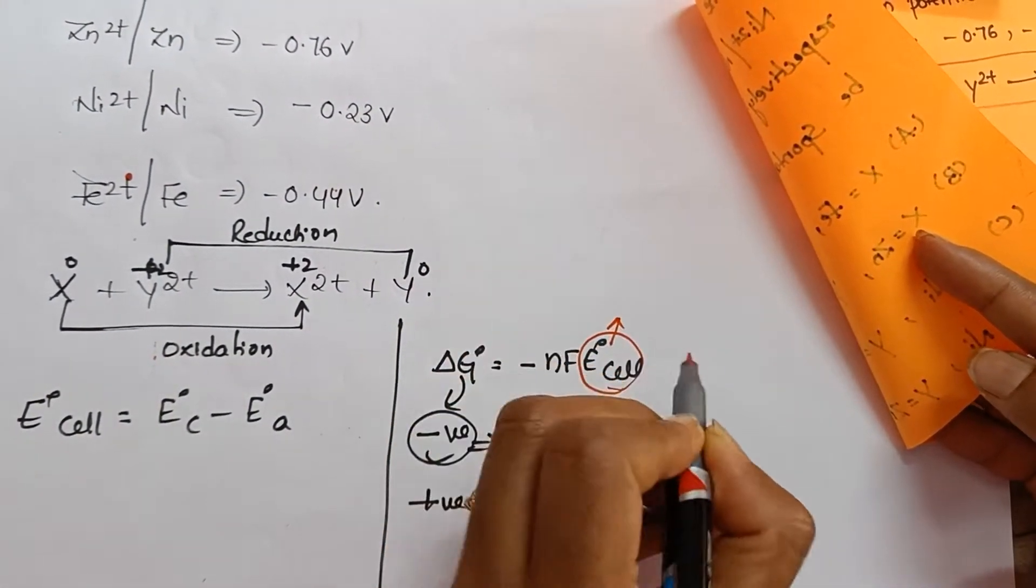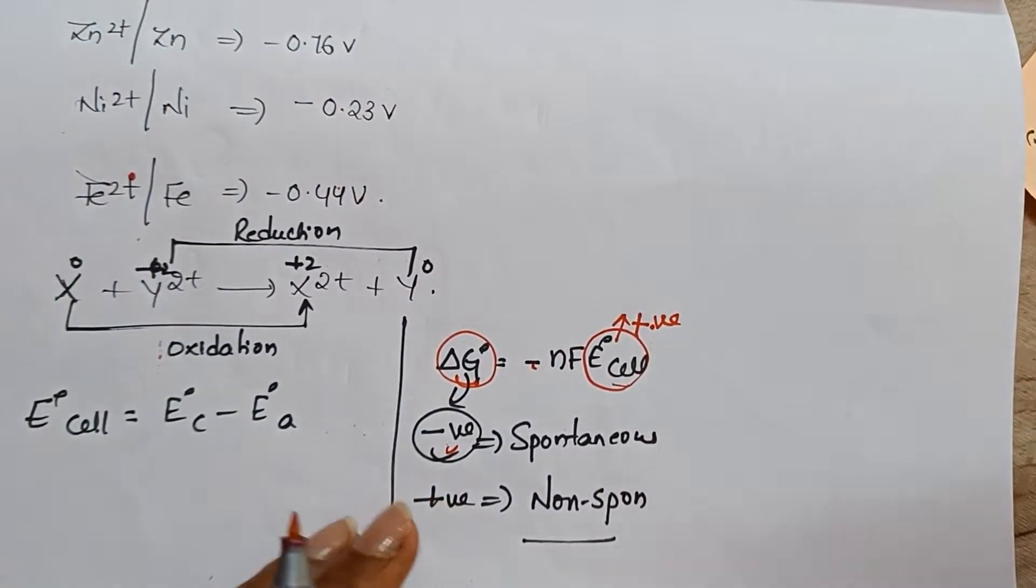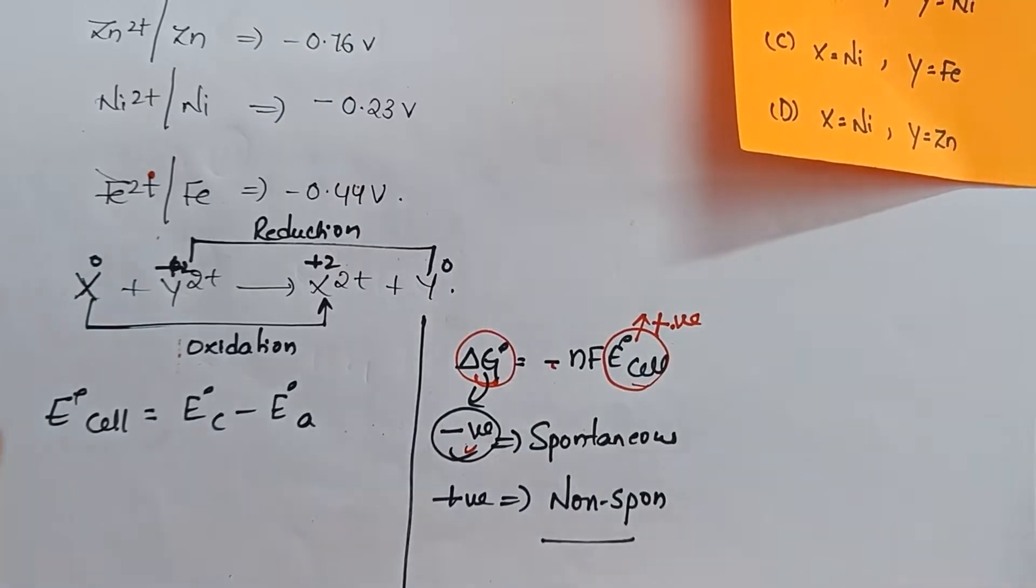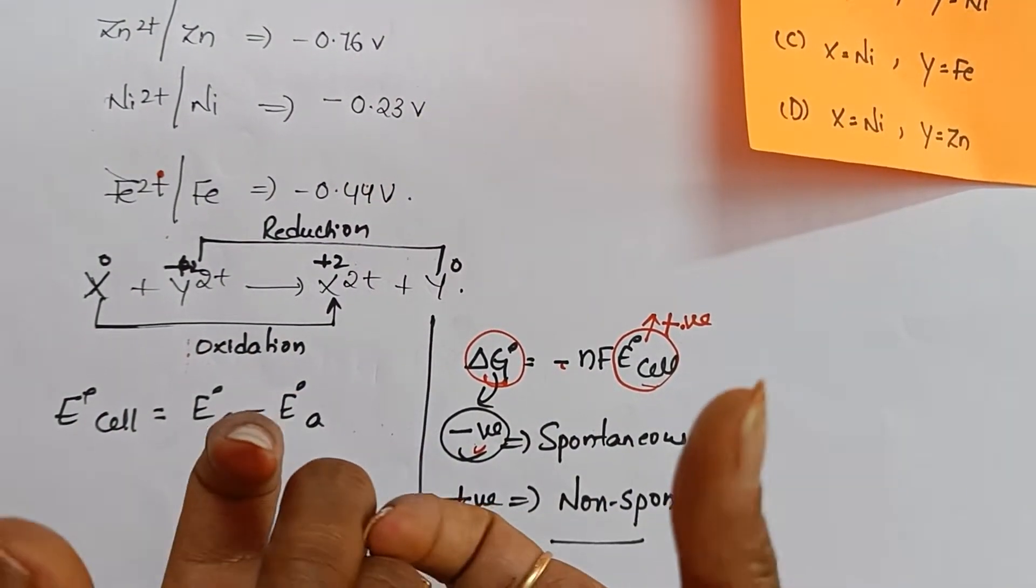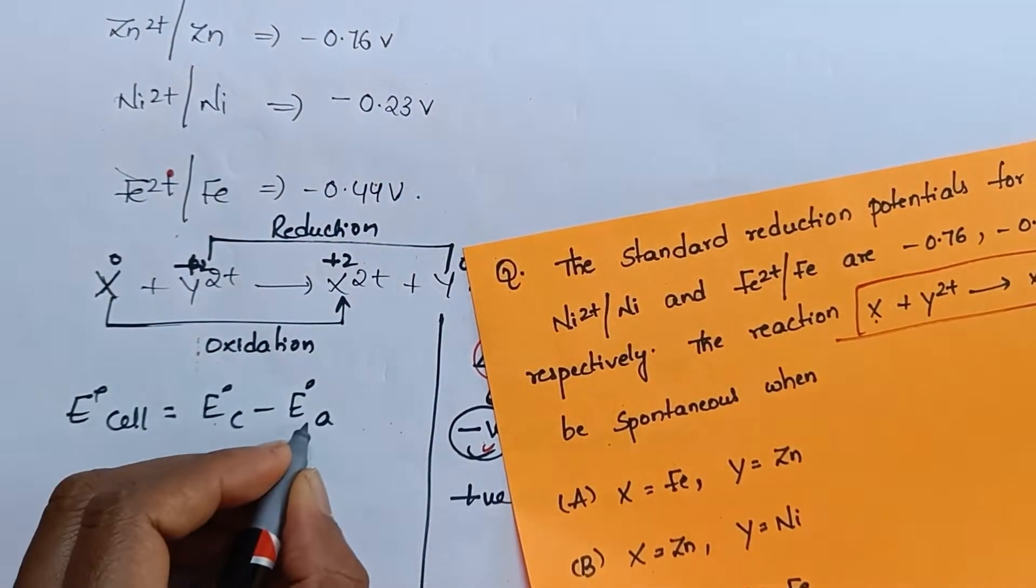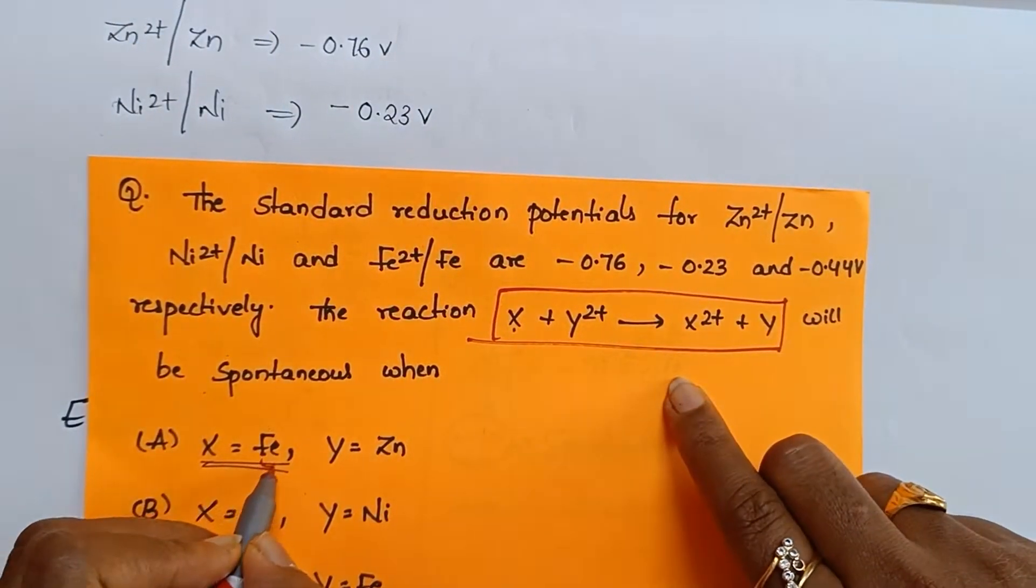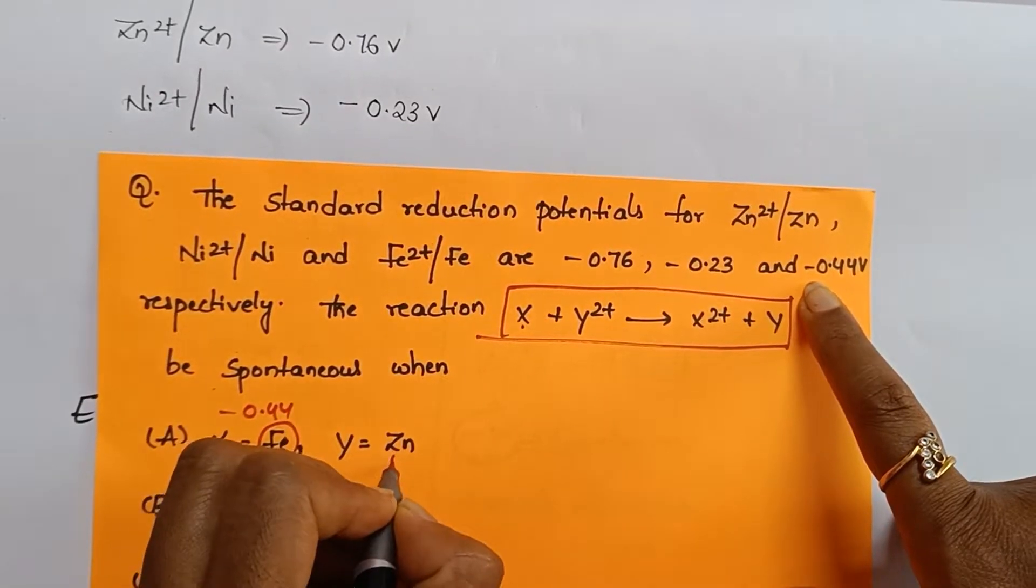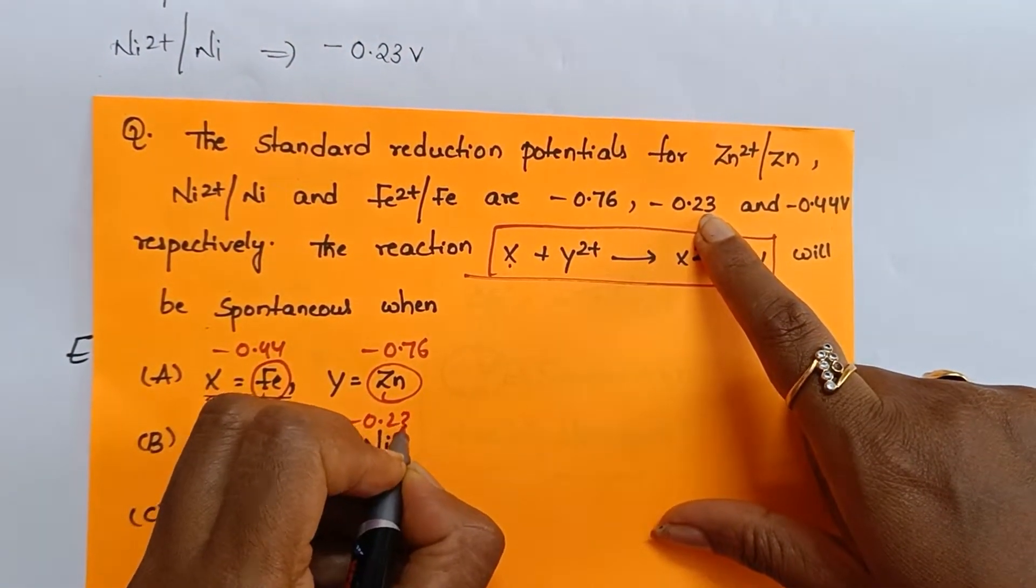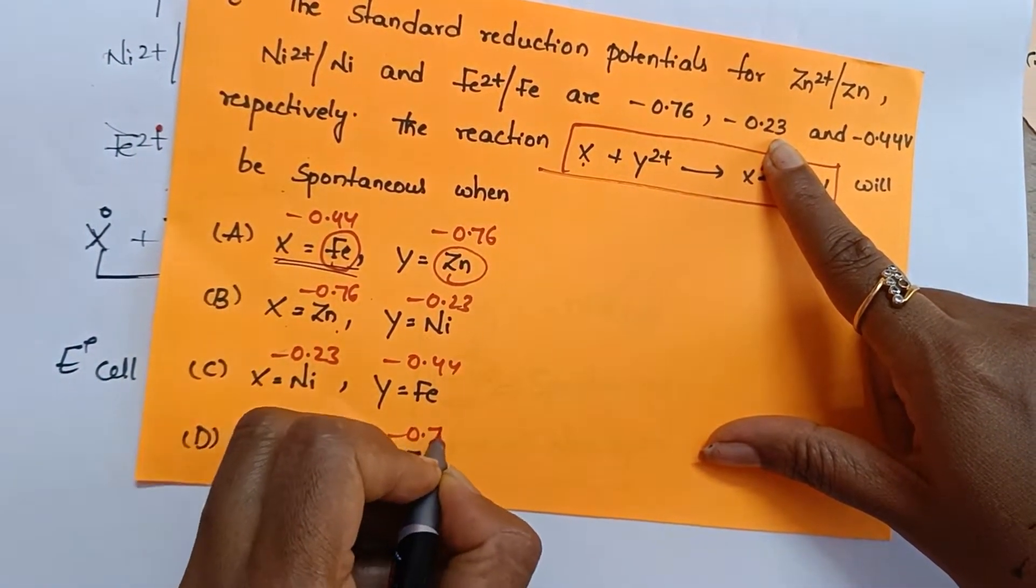How the delta G value will be negative? If E naught cell, if you substitute positive value, positive into negative will become delta G negative. So in order to make the reaction possible, E naught cell value, standard cell potential, that is the potential difference between two cells - cathode potential minus anode potential - that value should be positive, then only reaction will be spontaneous. So the difference between these two should be positive. Let us substitute iron. What is the value they have given for iron? Minus 0.44 and zinc, what is the value? Minus 0.76. Zinc is minus 0.76, nickel is minus 0.23. First write like this, then it will be easy for you. Iron is minus 0.44, nickel is minus 0.23, zinc is minus 0.76. This is the first step.